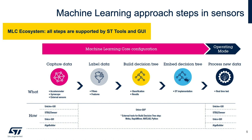Features are basically the input for a machine learning algorithm. With an external tool such as WEKA, we will be able to train and generate a decision tree. The decision tree will then be loaded back into Unico GUI in order to generate the register configuration needed to run the decision tree into LSM6DSO-X.